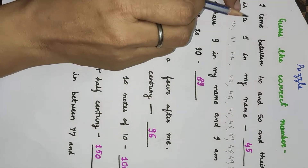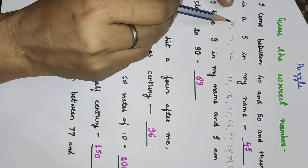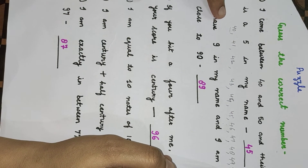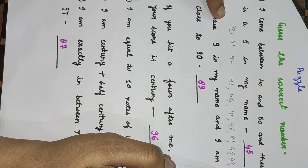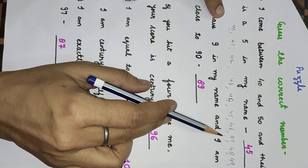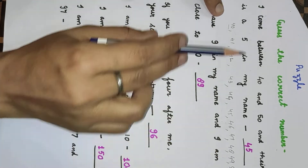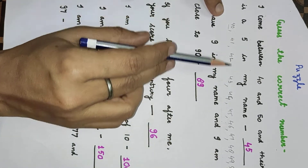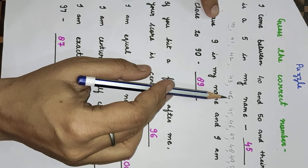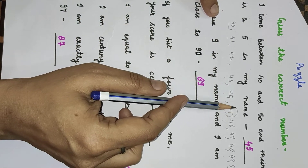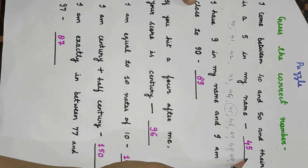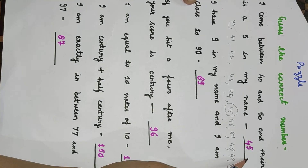I come between 40 and 50, and there is a 5 in my name. So in which number can you find the digit 5? 41 — no 5. 42 — no 5. 43 — no 5. 44 — no 5. Here is only 45 in which we get a 5. So our answer will be 45.